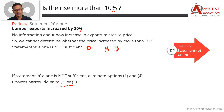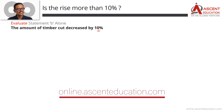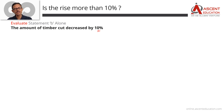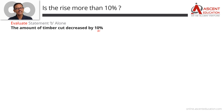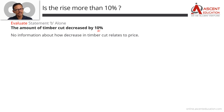Now let's evaluate Statement B alone. Statement B says the amount of timber cut decreased by 10%. It is not necessary that a decrease in timber cut leads to a price increase. We have no information about how the decrease in timber cut relates to a price increase.